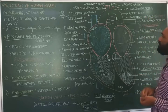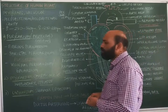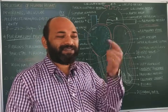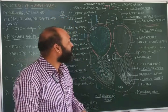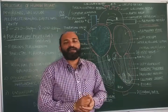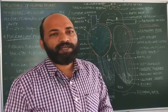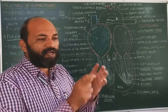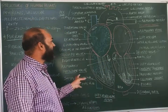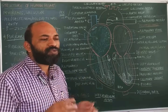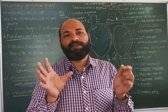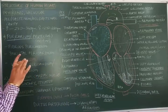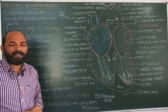In the human heart, the right atrium and right ventricle receive and pump out deoxygenated blood, while the left atrium and left ventricle receive and pump out oxygenated blood, with no mixing of blood. This makes the human heart a four-chambered heart with double circulation. This video covered the structure of the human heart. Thank you.